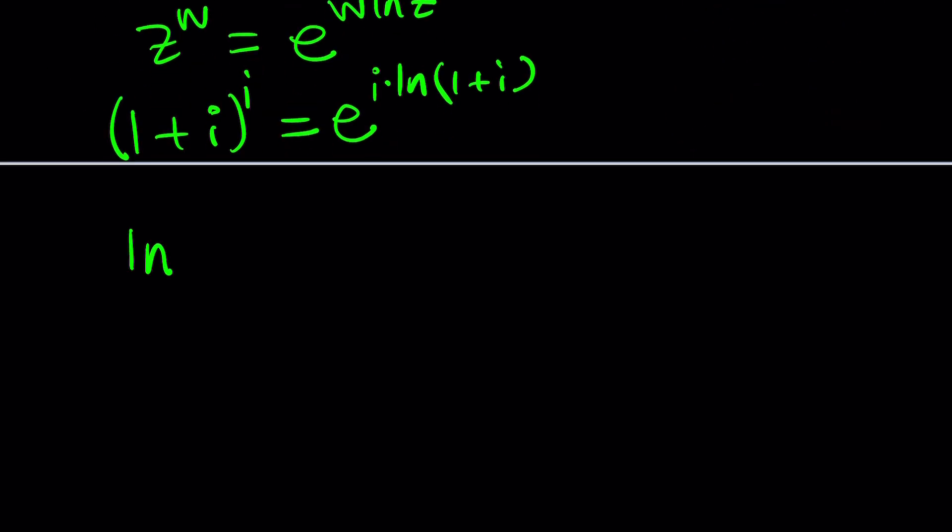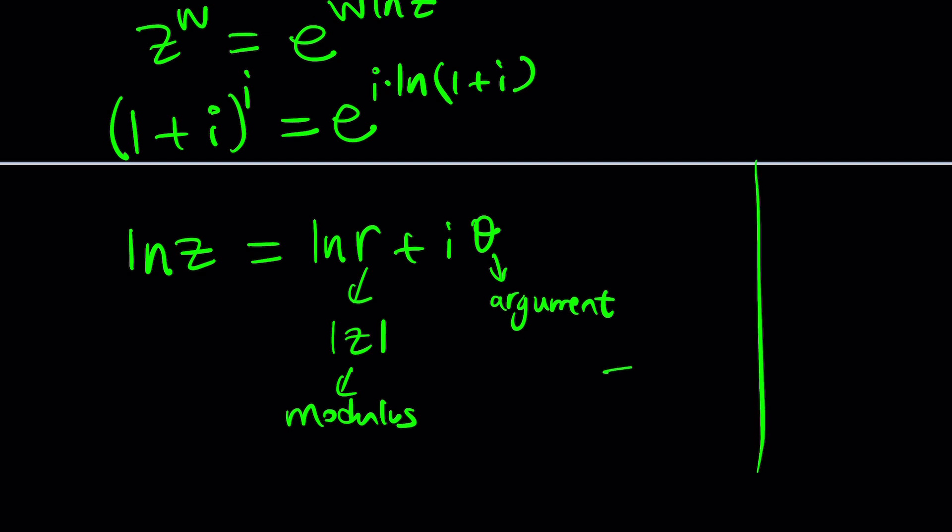Now we need to talk about the natural log of a complex number. Can I use z again? Let's just use z in this case. So ln z is given as ln r plus i theta. What is r? What is theta? Let me explain. r is the absolute value of z, which is also known as modulus. And theta is the argument, which is the angle.